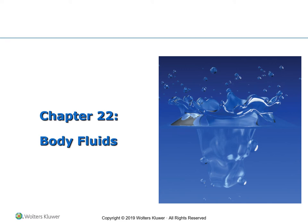Chapter 21 covers body fluids. We may look like a solid body, but we are made mainly of fluids — the main component being water. Beside this primary composition of water, there are many other substances dissolved in it: electrolytes, salts, nutrients, gases, waste products, as well as special substances such as hormones and enzymes.